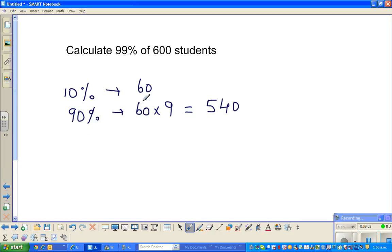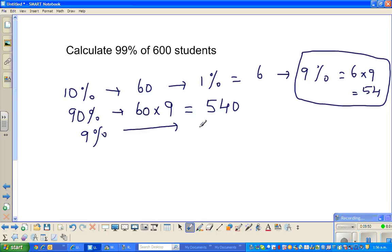Then you want to find 9%. Let me do the long way. 1% would be 100th of this, so 1% is 6 students. From this, I can say 9% would be 6 times 9, which is 54. So 9% is 54.